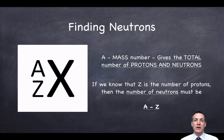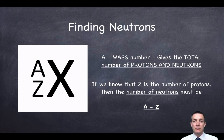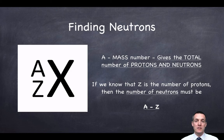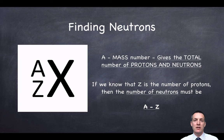Now, if we want to find out about the number of neutrons — because we now know how to find protons and electrons — we have to use the mass number. The mass number doesn't tell us the number of neutrons directly, but the total number of protons and neutrons. If we can find the number of protons from Z and subtract Z from A, we'll be left with the number of neutrons. So to find the number of neutrons in an atom, we subtract Z from A.